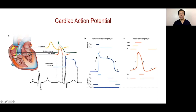Rapid depolarization is facilitated and mediated by the rapid sodium channel in the cardiac myocyte. The sudden closure of the sodium channels with opening of the transient outward currents — the ITO — which allows potassium to exit, produces the notch or early after-depolarization of phase one. This is followed by opening of the calcium channel, allowing calcium to enter the cell and producing the plateau of phase two.